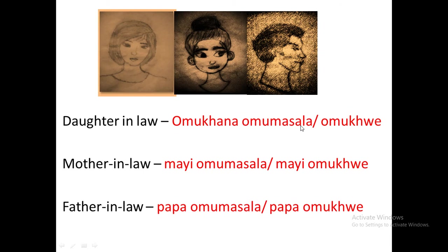Mother-in-law is 'myi omusala', or you can also find others referring to her as 'myi omuhui' — both terms are used for mother-in-law. Father-in-law is 'papa omusala', or also 'papa omuhui'. So 'myi' means mother, 'papa' means father, 'omuhana' means a girl, and 'omusala' or 'omuhui' refers to a person who is an in-law.